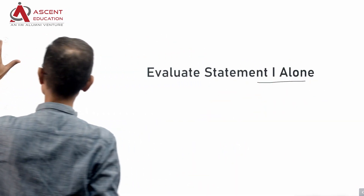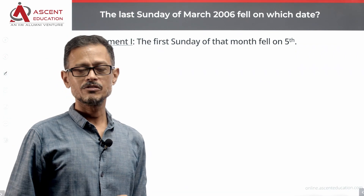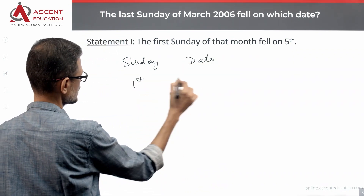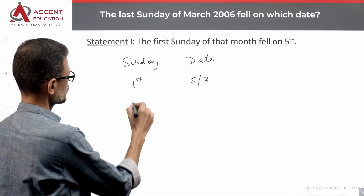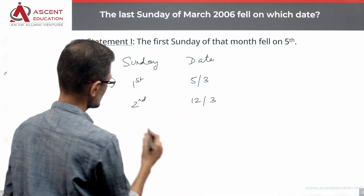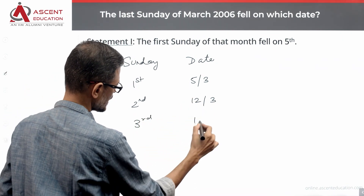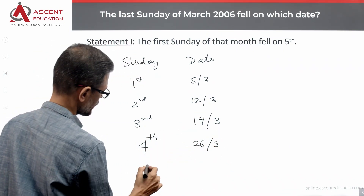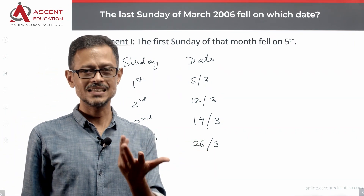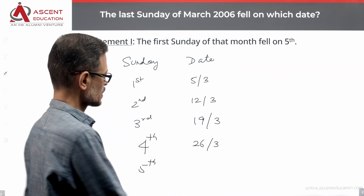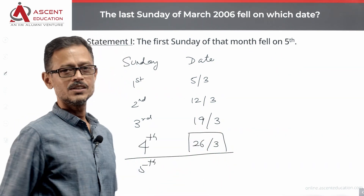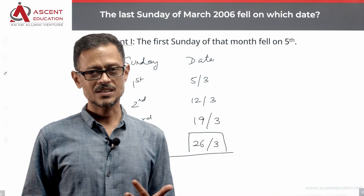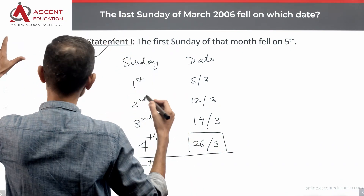Looking at Statement one alone: the first Sunday of the month fell on the 5th. So the second Sunday is 7 more days after the 5th, which is the 12th. The third Sunday is 7 more days, which is the 19th. The fourth Sunday is 7 more days, which is the 26th. The fifth Sunday would be 7 more days, which is the 33rd — that doesn't exist in March. So the last Sunday is the fourth Sunday, on the 26th of March. Using Statement one, we know the date of the last Sunday of March 2006 — it gives us a unique answer. Statement one alone is sufficient.